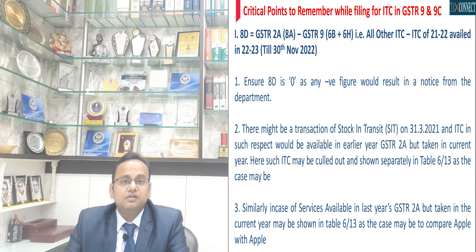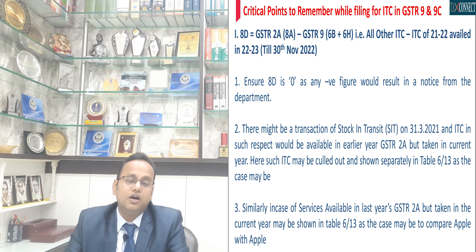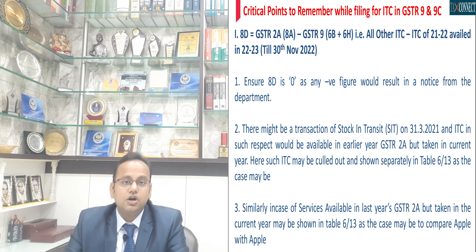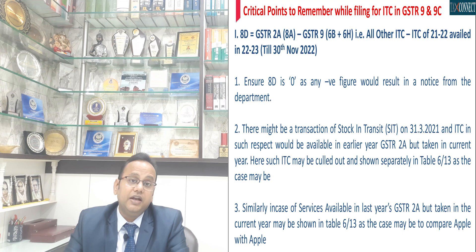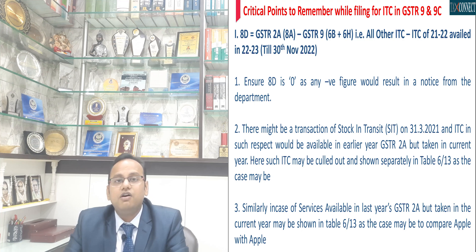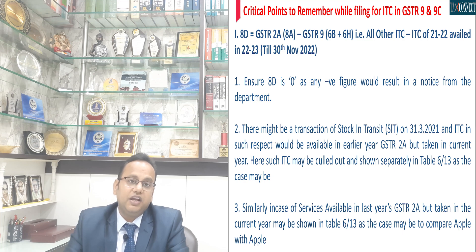Now, there can be a genuine reason for such a negative figure. For example, say certain stock was in transit on 31st March 2021 — the last year — but you received the stock and took the ITC in April 2021. Therefore, your 2A would not reflect such ITC for financial year 21-22, but 6B and correspondingly table 8B would reflect it, and this could lead to a negative figure in 8D. Similarly, for any services pertaining to 21-22 which are reflected in the 2A of 2021 but where ITC was taken in 21-22, that could also lead to a negative figure in 8D.